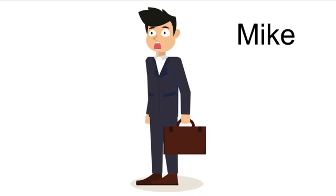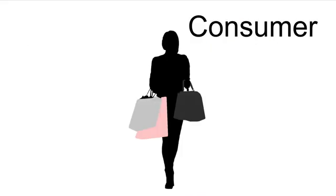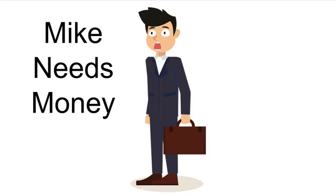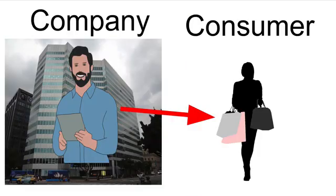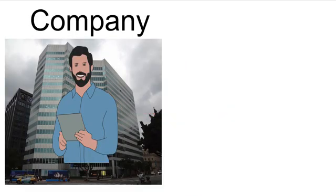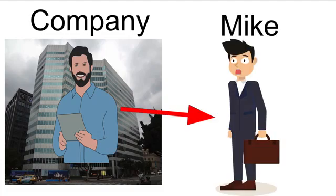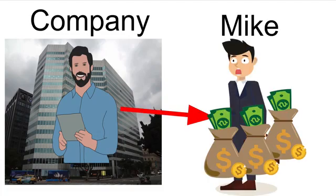This is an affiliate. We'll call him Mike. This is a company, and this is a consumer. Mike needs to make more money. The company needs to sell more products to consumers. And to get help selling more products, the company brings on Mike as an affiliate. The company will pay Mike a commission for every sale he makes.